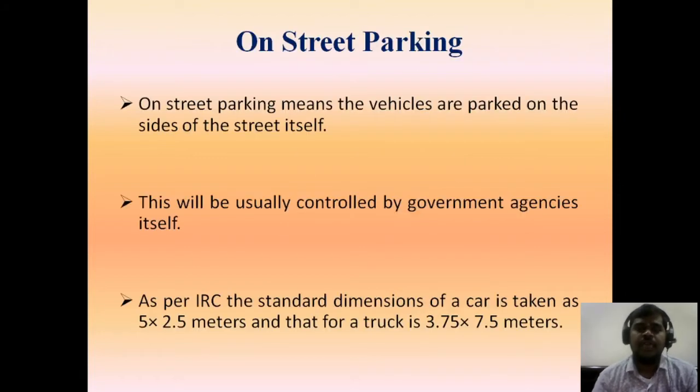We have two types of parking, mainly on-street and off-street. In on-street parking, vehicles are parked on the sides of the street itself. This is usually controlled by government agencies. As per Indian Road Congress, the standard dimensions of a car is taken as 5 x 2.5 meters, and for a truck it is 3.75 x 7.5 meters. This is a type of parking where vehicles are parked in the street or beside the street, and is solely managed by government agencies.